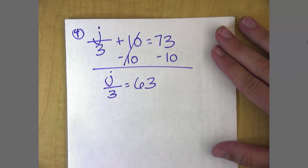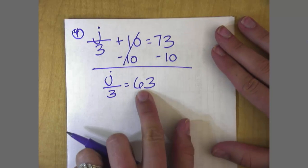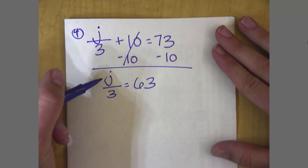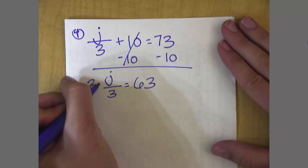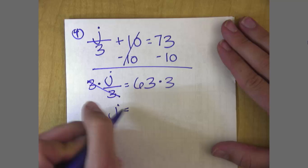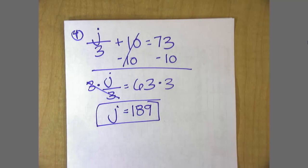I hope that I didn't trick anyone and that you didn't say 63 divided by 3 and got 21 as your answer. Hope that you remember that this is division so you need to multiply to undo it, and j is equal to 189. Good when I don't trick you.